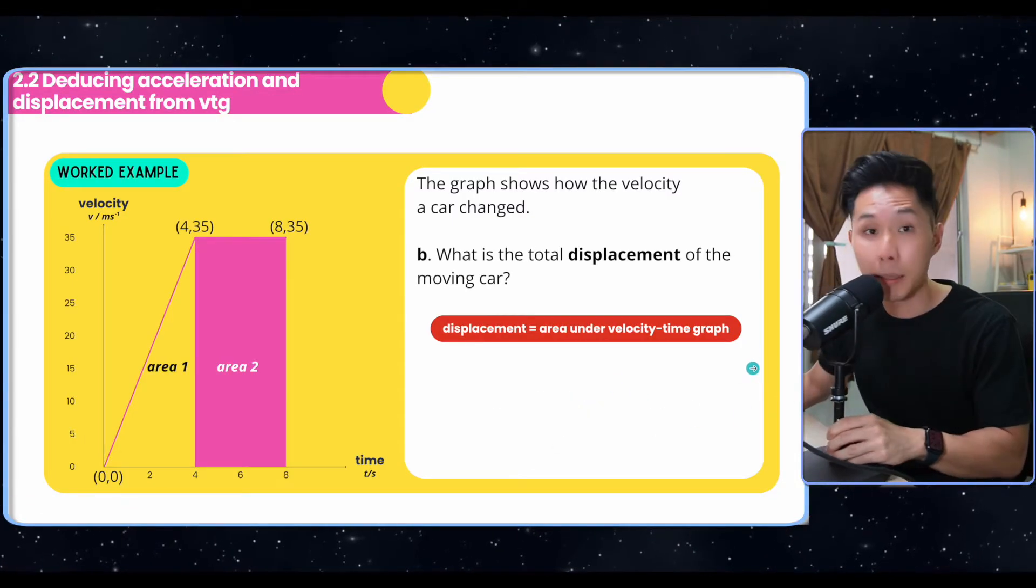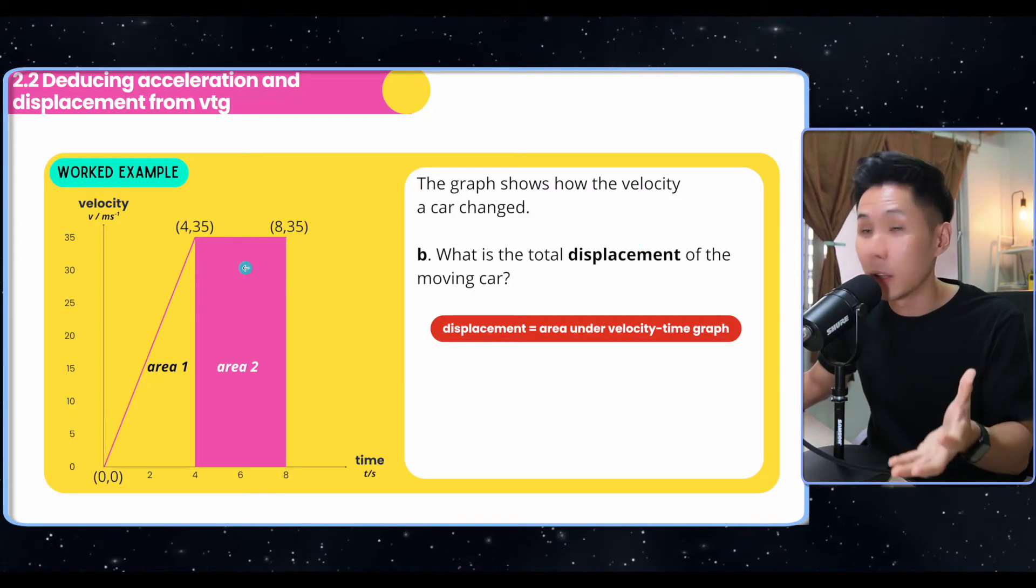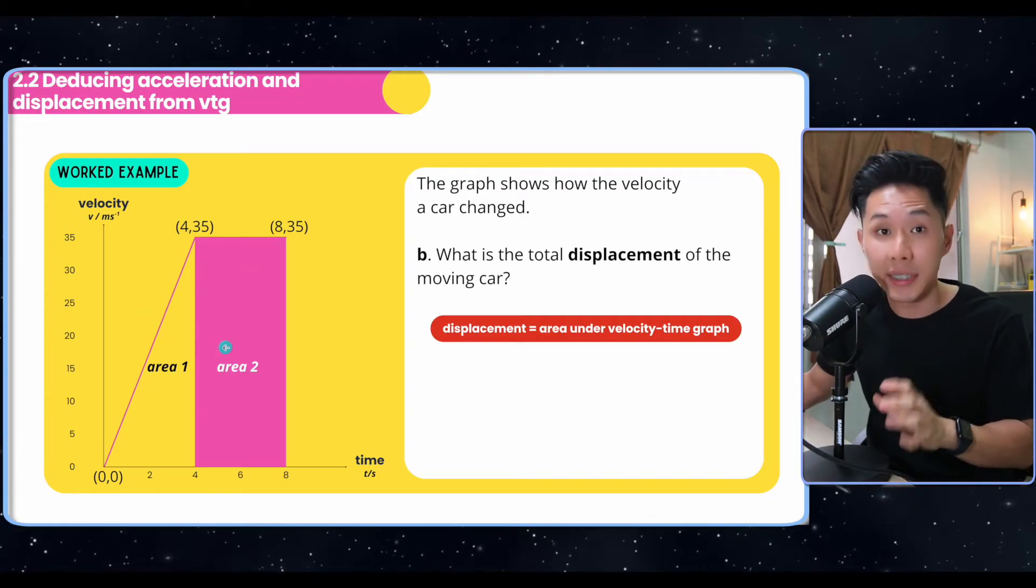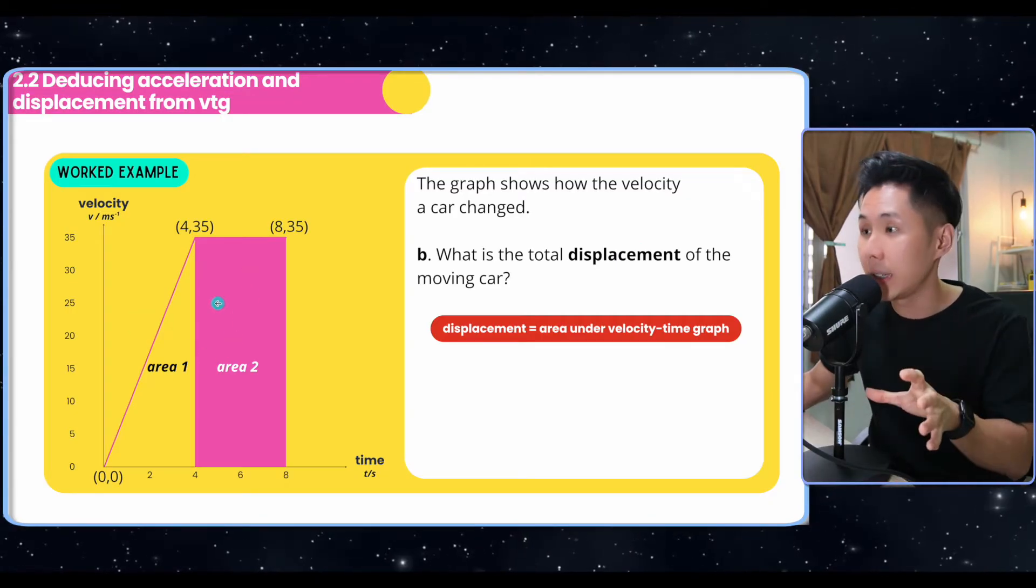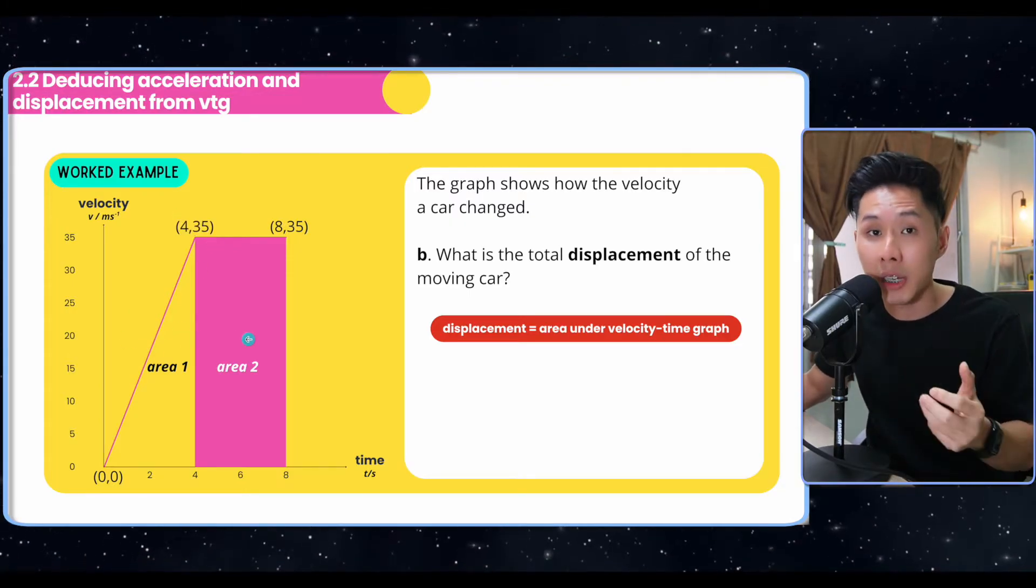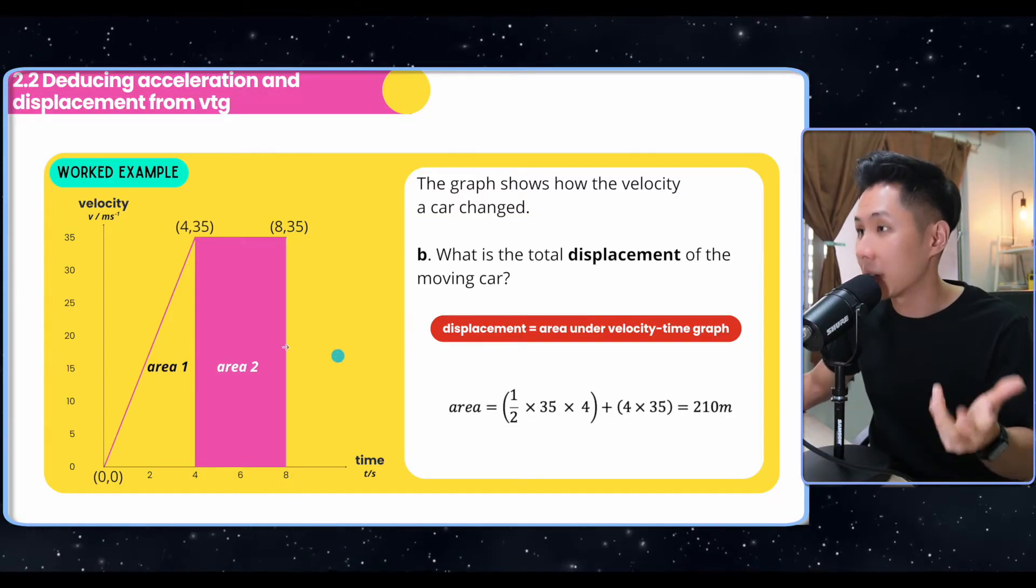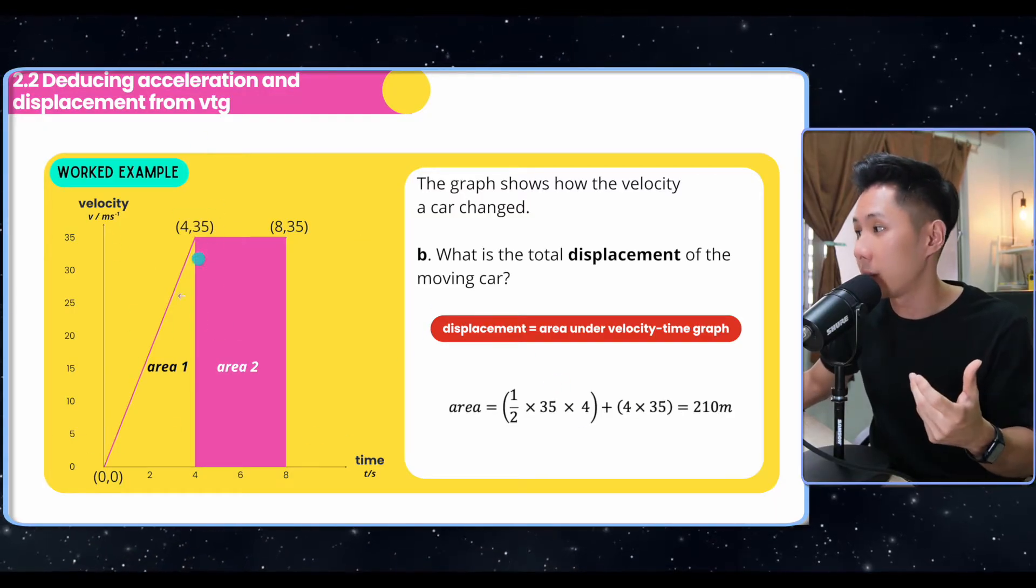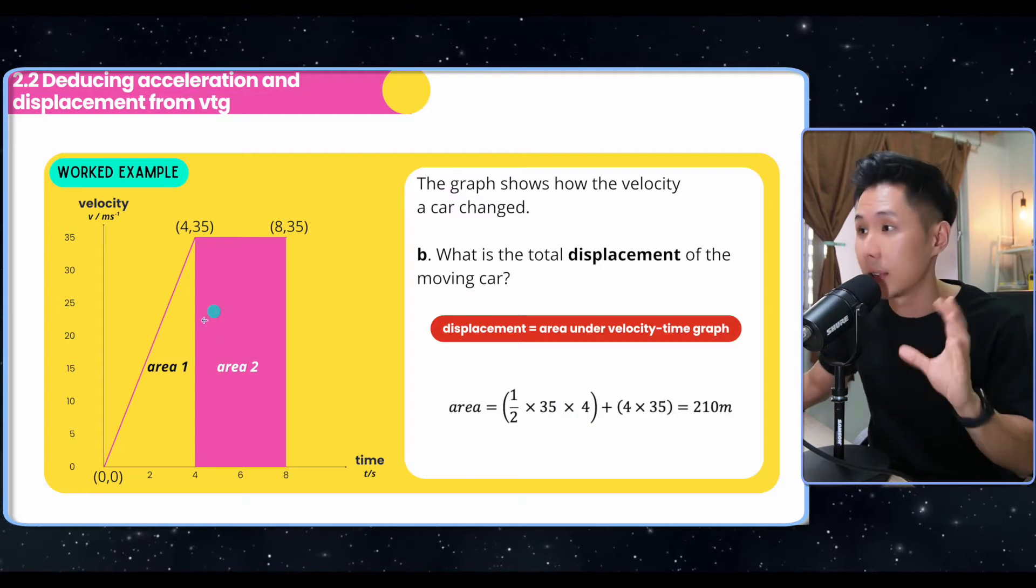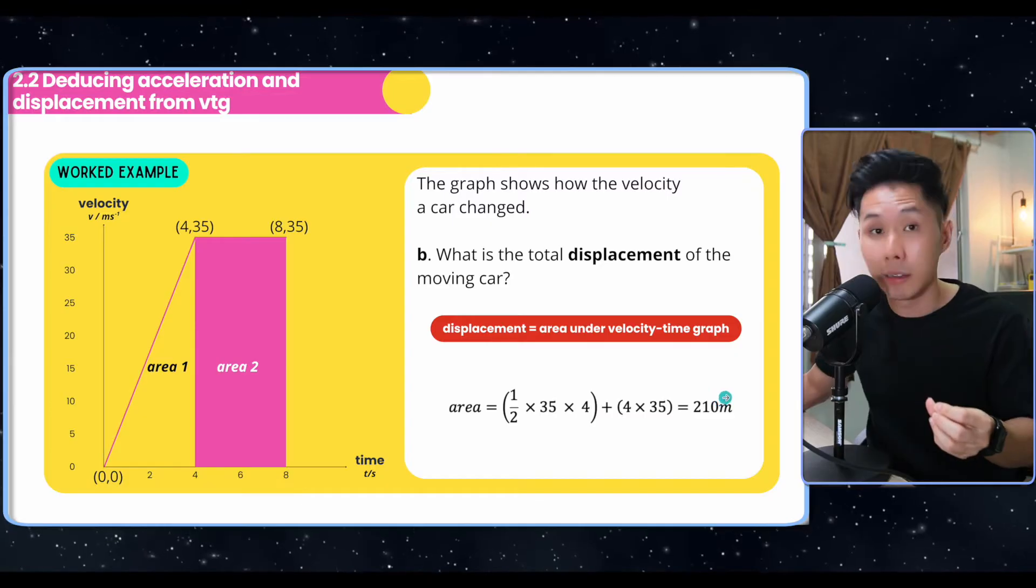The next one is also something we touched in IGCSE physics. To calculate the displacement traveled by an object in a velocity time graph, we can just calculate the area under graph. Usually, if it's a trapezium, I'll split them into two parts, the triangle and the rectangle, to make it simple to calculate. So I will just plug in all the values, multiply by 35 by half, which is the area of the triangle, followed by the area of the rectangle. And this is the result that I get.